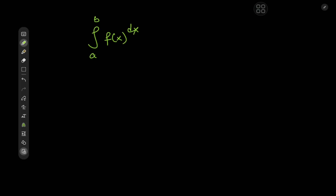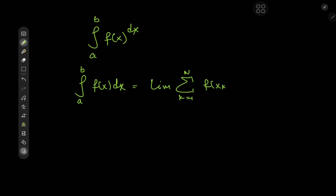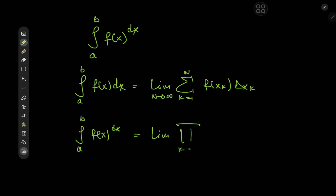So we have the integral from a to b of f(x) to the dx. Now how on earth can we define this thing? We know the classic Riemann integral — the integral from a to b of f(x) dx — is defined as the limit of a sum. Specifically, it's the limit of the sum over k from 1 to n of f(x_k) times delta x_k, as n tends to infinity.